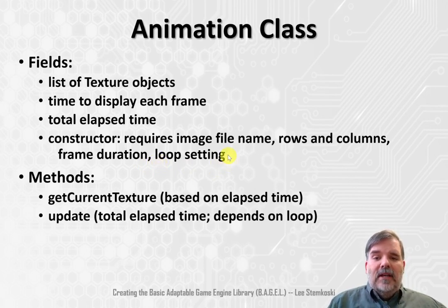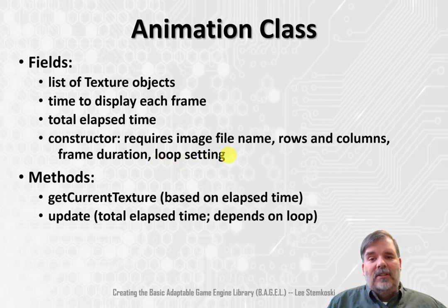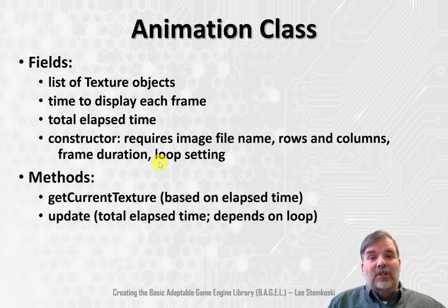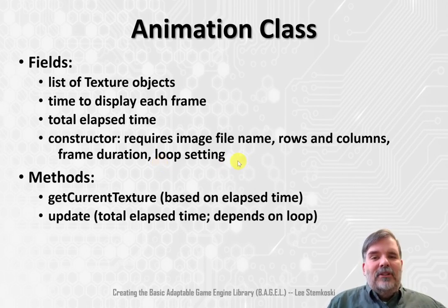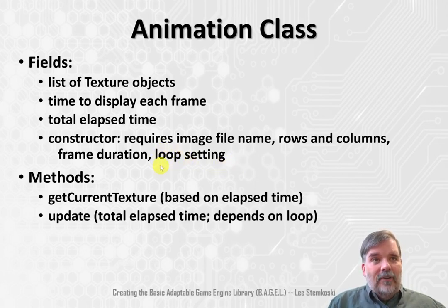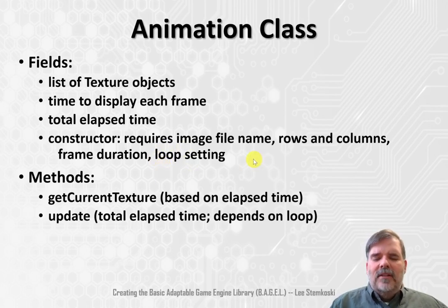Some animations, like perhaps an explosion, would just occur once and then stop. You can imagine another animation, such as a wheel spinning around and around, that might just continue to repeat. So this will be some kind of Boolean variable which we'll need to take into account as well — does the animation loop back to the beginning once it's finished?